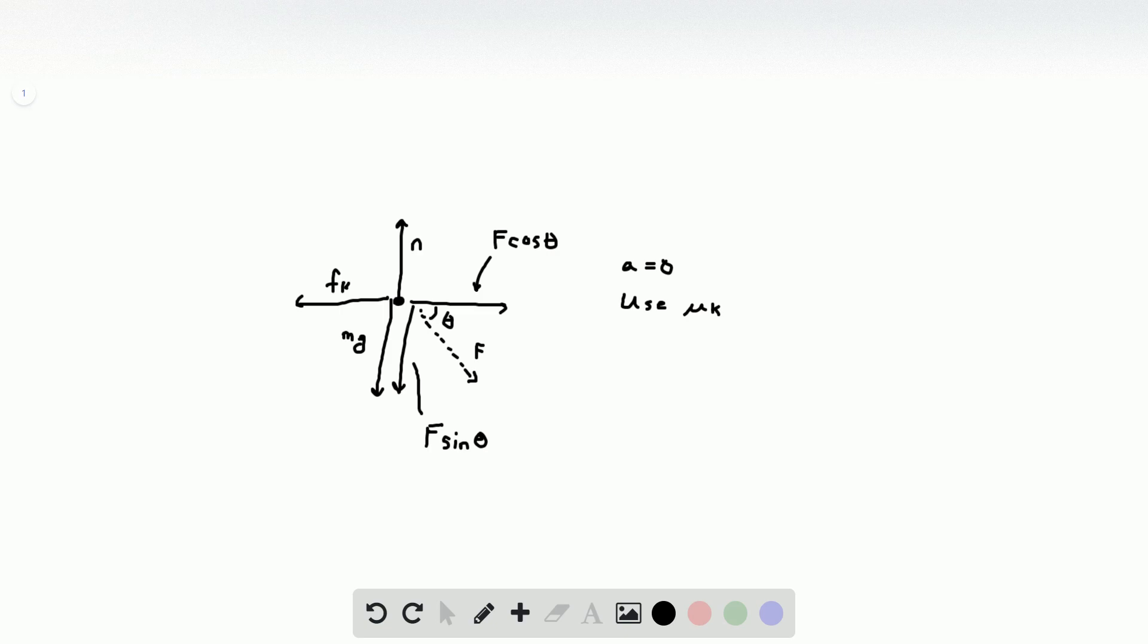So the first thing we're going to do is the sum of the forces in the Y direction, and we know this is equal to zero since there's no acceleration in the Y direction. This implies that the normal force minus mg minus F times sine theta is equal to zero, and we can solve this for the normal force, which gives mg plus F sine theta.